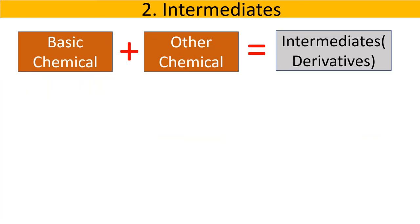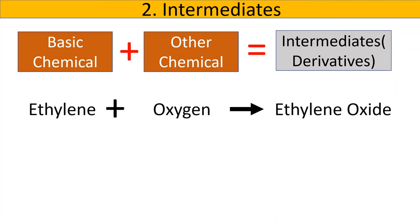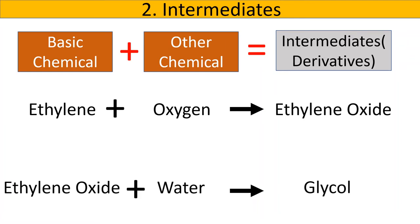The second class of products is intermediates, also known as derivatives. Intermediates are made when basic chemicals go through a reaction with another chemical to form new chemicals. For example, ethylene reacts with oxygen to create the intermediate ethylene oxide. Glycol is also an intermediate which comes from the reaction of ethylene oxide and water. Another example of an intermediate comes from the oxidization of propylene to form acrylic acid.